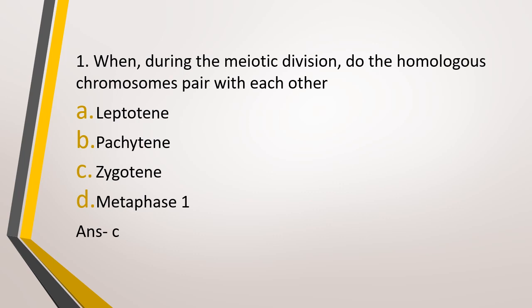Now remember, meiotic division has two parts: meiosis 1 and meiosis 2. In meiosis 1, prophase 1, there are five stages. What are those? Leptotene, Zygotene, Pachytene, Diplotene and Diakinesis. In the Zygotene stage, the pairing of homologous chromosomes occurs. And what is the pairing process called? Right, synapsis.